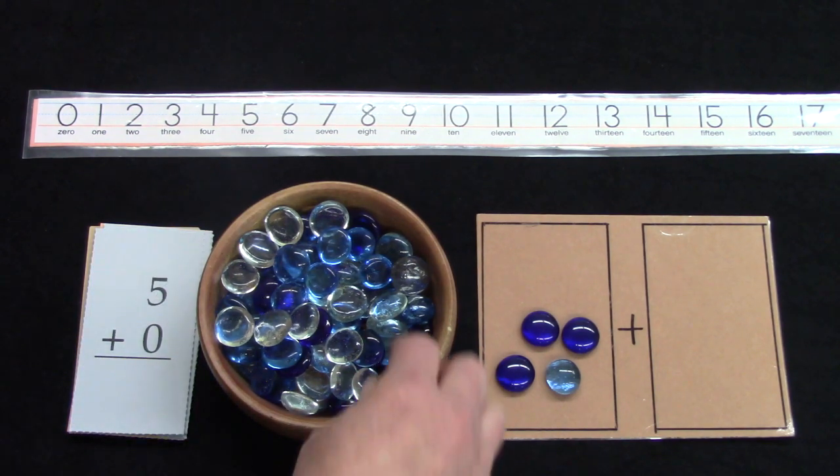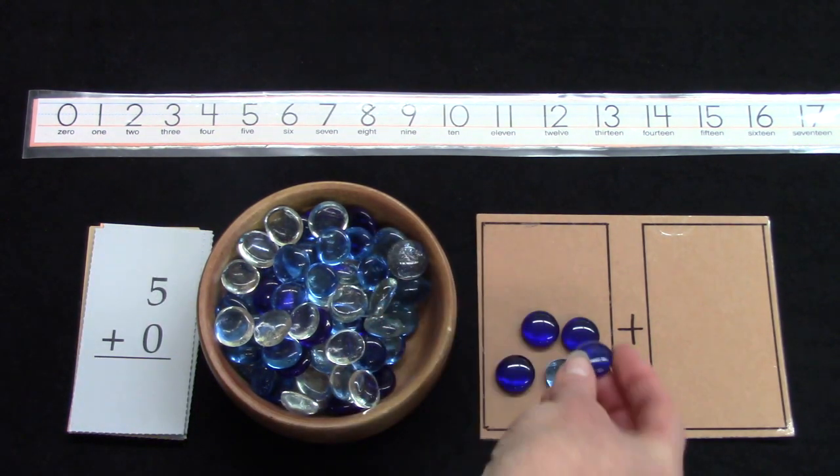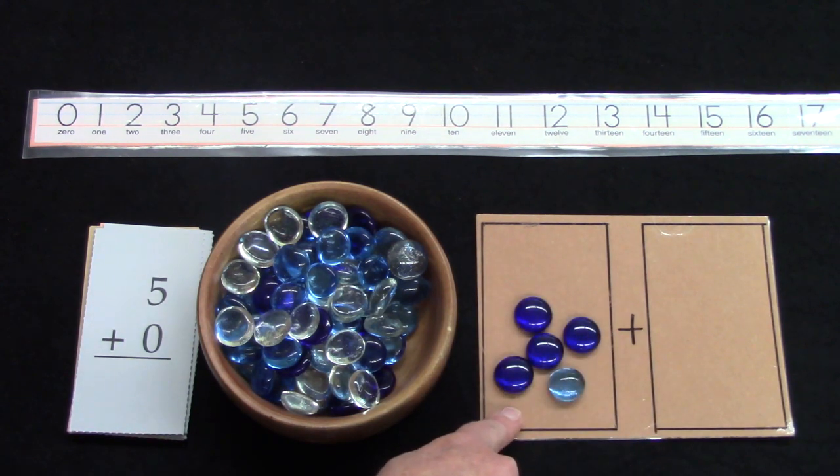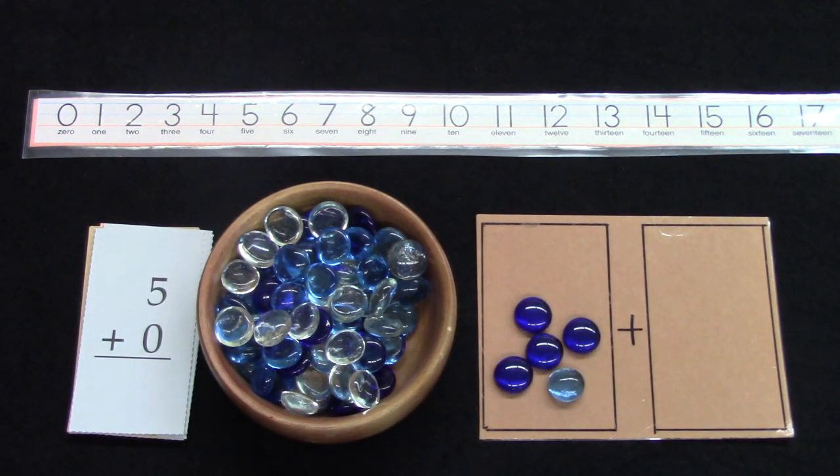In five plus zero, we're going to take another gem and add it on to this side so that we have five plus nothing, zero. Five plus zero is five.